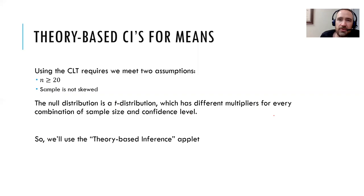Okay, let's take a look at how the theory-based approach works for this. When we're using the central limit theorem, it requires that we meet two assumptions. Our sample size has to be at least 20 and our sample cannot be skewed. We can have a small amount of skew in there, but if it gets too heavily skewed, it throws everything off. When we meet those two assumptions, then the central limit theorem says, hey, you've got a null distribution that's shaped just like we expect, the T distribution that kind of has that bell-shaped curve. And it also predicts what the multipliers would be for every combination of sample size and confidence level. So previously we talked about how there was basically one multiplier for the 90, one for the 95, one for the 99. When we get into CIs for means, there's a different multiplier for every different combination. And so basically if we're using a theory-based approach, we use the theory-based inference applet. So let's try that out.